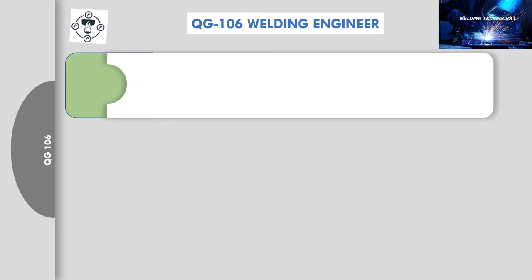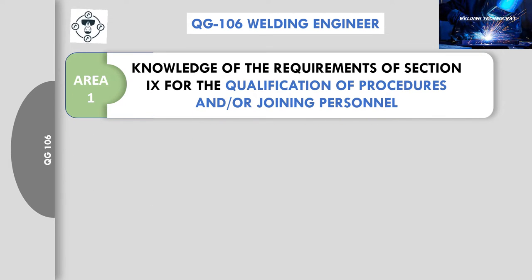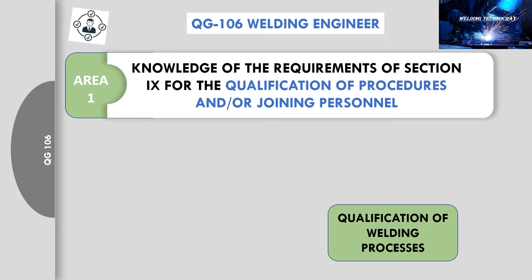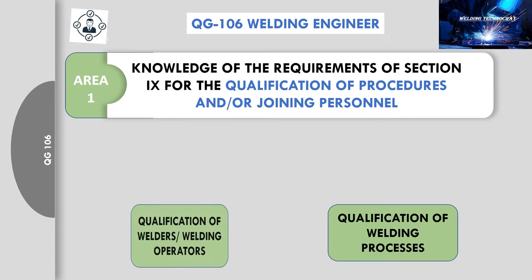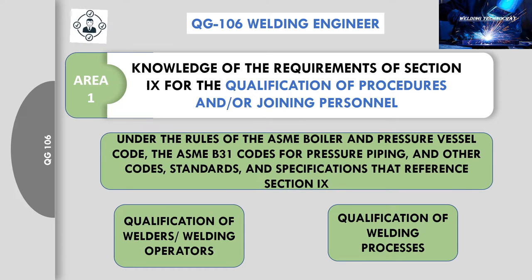Area 1: knowledge of the requirements of ASME Section 9 for qualification of welding processes used for the construction of components, and qualification of welders and welding operators, under the rules of ASME Boiler and Pressure Vessel Code, the ASME B31 codes for pressure piping, and other codes, standards, and specifications that reference Section 9.